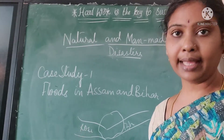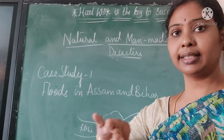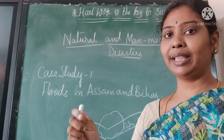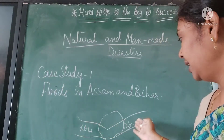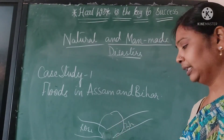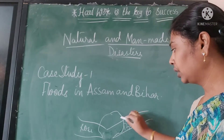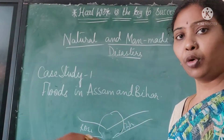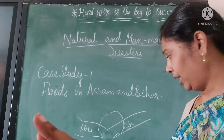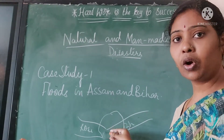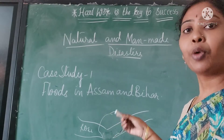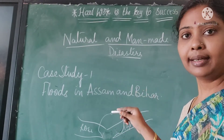Kosi is also known as the sorrow of Bihar. The reason these rivers cause so much flooding is that both states are in a low-lying area. When these rivers come, they bring a lot of silt which is deposited and not washed away, causing a lot of flooding. In the monsoon months there is a lot of rainfall, which also increases the water level. Population increase is also a reason.